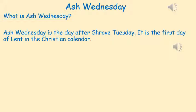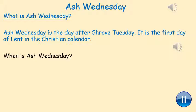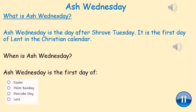Let's begin. Ash Wednesday. So what is Ash Wednesday? Ash Wednesday is the day after Shrove Tuesday. It is the first day of Lent in the Christian calendar. Let's start off with our first question: When is Ash Wednesday? Remember we are retrieving, so the answer will be there in the text. Pause the video whilst you're writing your answer down. Second question: Ash Wednesday is the first day of — is it Easter, Palm Sunday, Pancake Day, or Lent? Tick one answer.